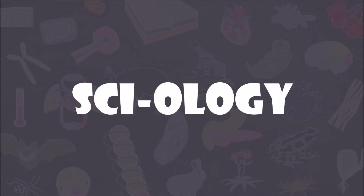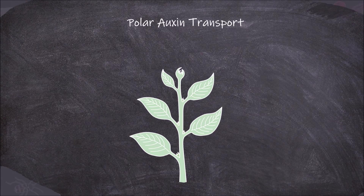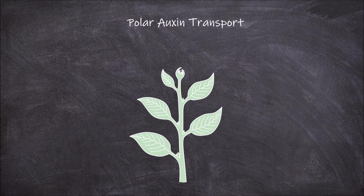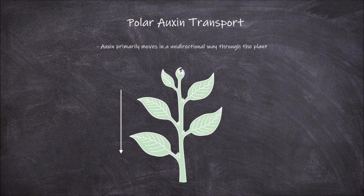Welcome back to my channel. In this video we're going to go over polar auxin transport. Polar auxin transport refers to how auxin primarily moves in a unidirectional way through the plant, from the apex to the base.